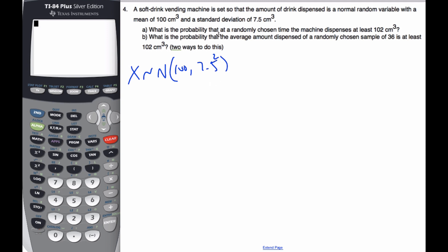What's the probability that a randomly chosen machine dispenses at least 102 centimeters cubed? Well, that's simply saying what's the probability that X is bigger than or equal to 102. If I think about my normal curve, this is one particular dispenser. I know it should be 100, and here's 102. I'm looking for this area here.